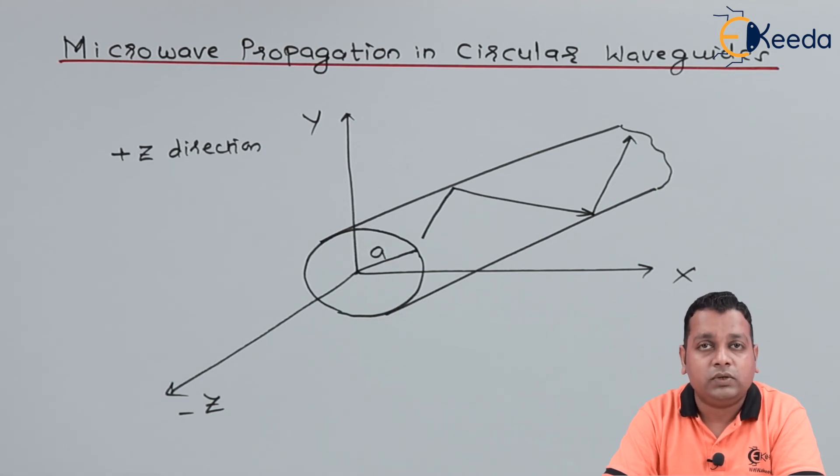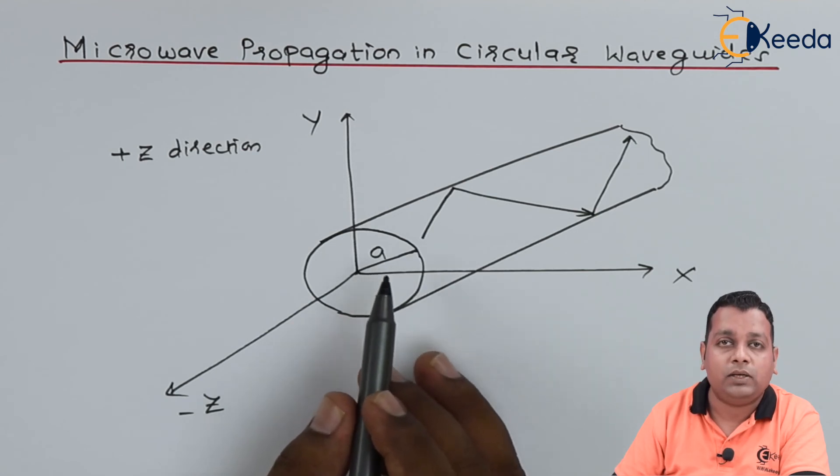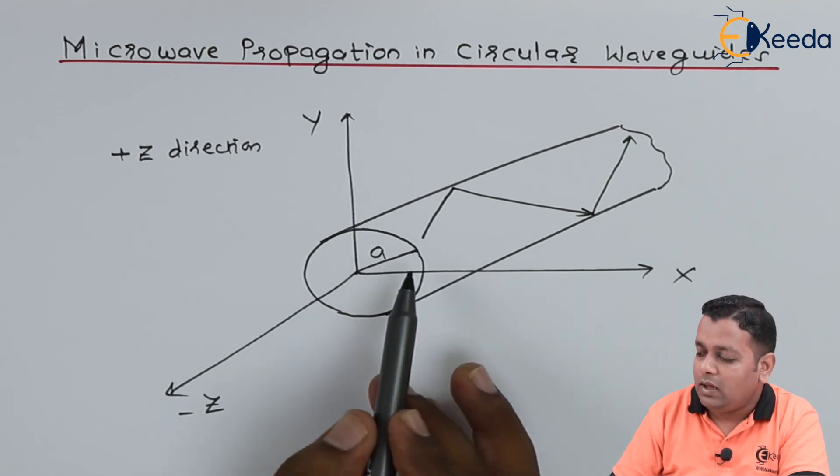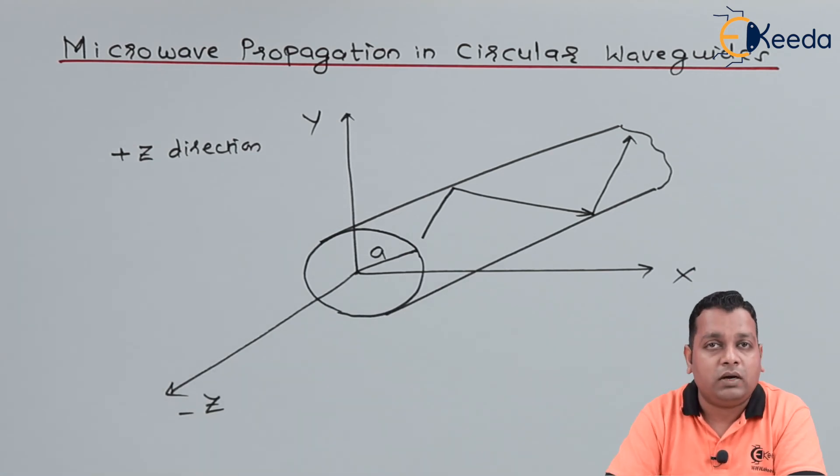So in the next lecture we shall be having a solution to these wave equations when the medium is bounded to this much of limited cavity having a radius small a, and the cavity is bounded by the perfect conducting metallic walls.